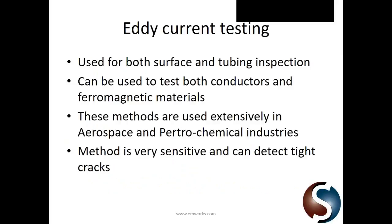By far the most common form of electromagnetic-based non-destructive testing is eddy current testing. It makes use of eddy currents generated by an exciting AC coil, and is used for both surface inspection and tubing inspection — a great method for inspecting pipes and surface phenomena, applicable to both conductors and ferromagnetic substances.